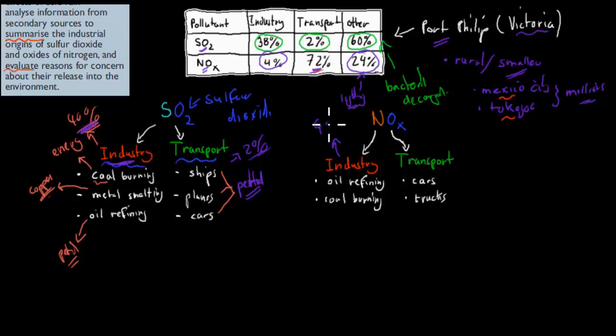So here only 4% come from industry, whereas 72% come from transport. And that's mainly from our trucks and from our cars. If you remember the equation that I gave in a couple of videos back, we had N2, which was gas in our atmosphere, nitrogen gas, plus O2, gas in our atmosphere, oxygen. That combines to form 2 moles of nitrogen monoxide.